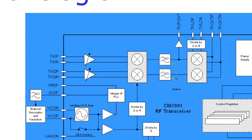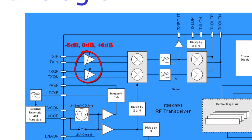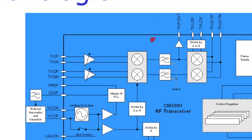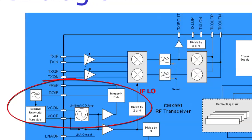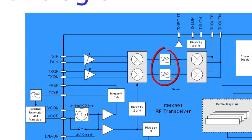The transmitter requires analog IQ baseband signals at the differential inputs. The input stage provides a software-controlled gain range of 12 dB. The IQ baseband input is upconverted to an IF, which can be in the range of 45 MHz to 120 MHz. The IF LO is developed on chip. The IF signal is filtered to reduce harmonic content, and the bandwidth of these filters is adjustable. The IF can also be passed off chip if needed.